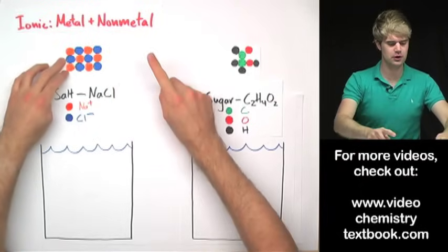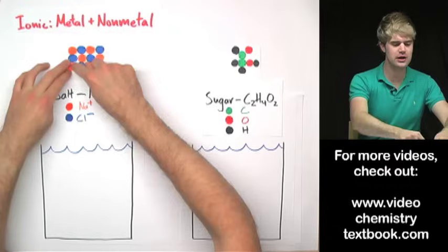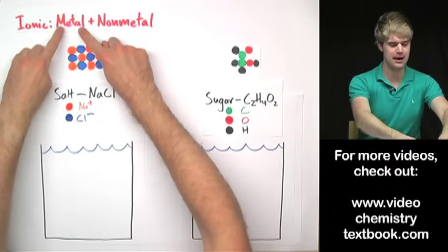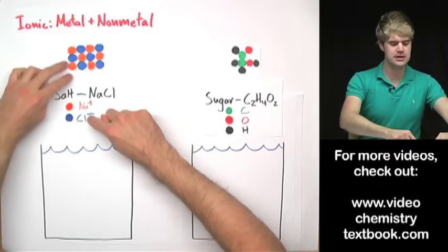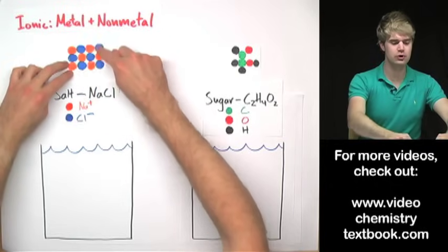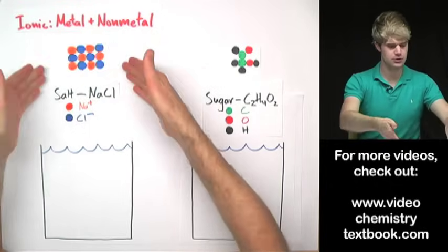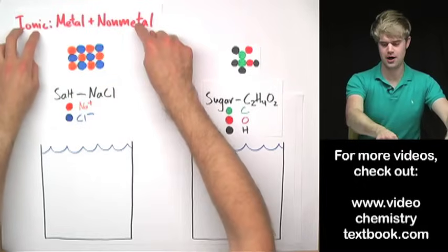This is what a grain of salt would look like. It's made of sodium ions, Na+, which are metals, and Cl-, chloride ions, these blue things here which are nonmetals. So salt is an ionic compound made of metals and nonmetals.